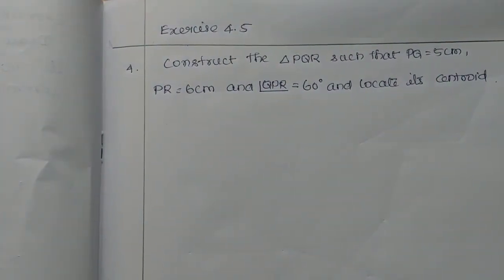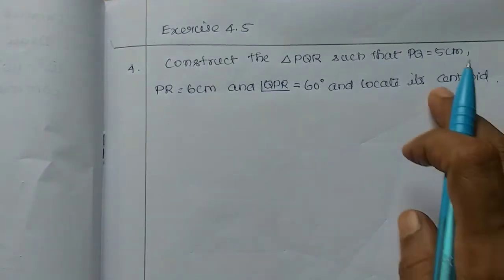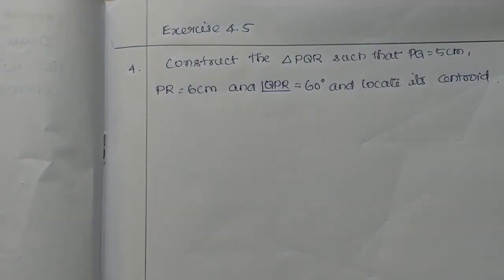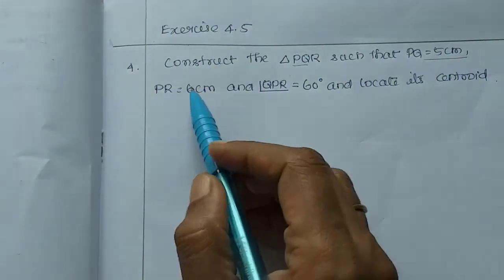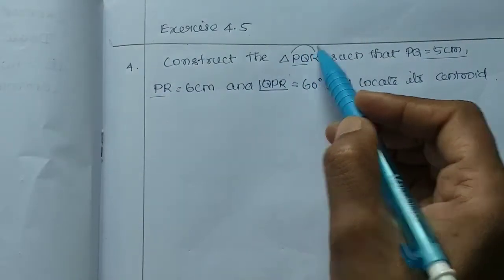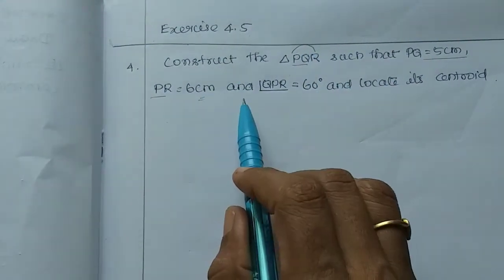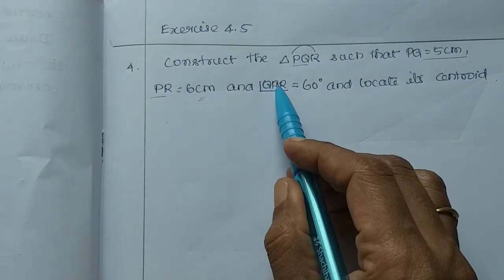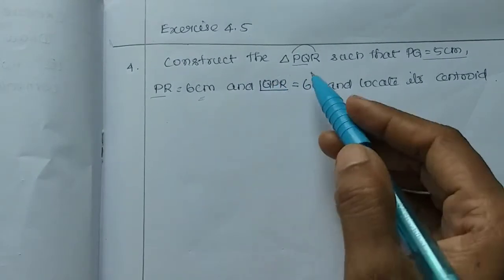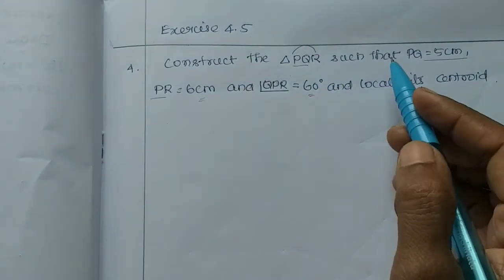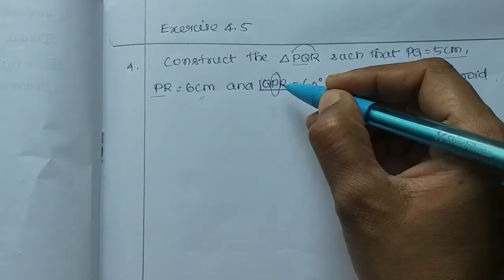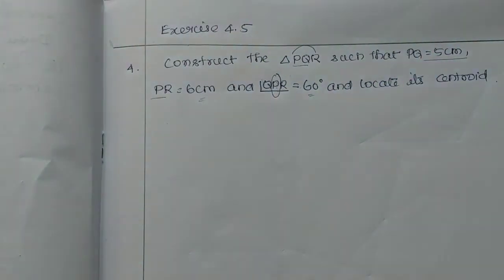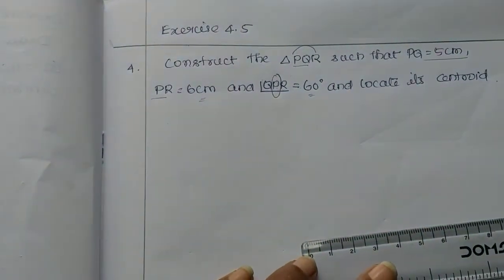If you want to read the triangle, you can draw a rough diagram. Then, PR is equal to 6cm, and QPR is equal to 60 degrees. If you want to read the angle QPR, the middle is P — that is 60 degrees. Now, this is an acute angle triangle.